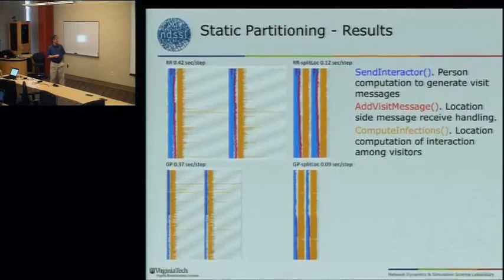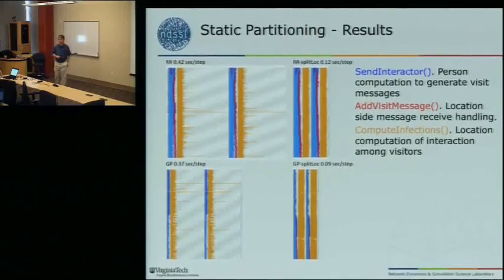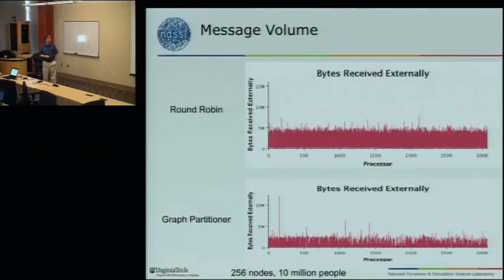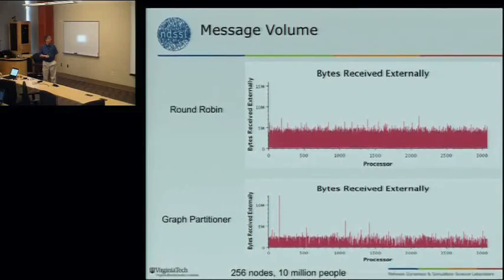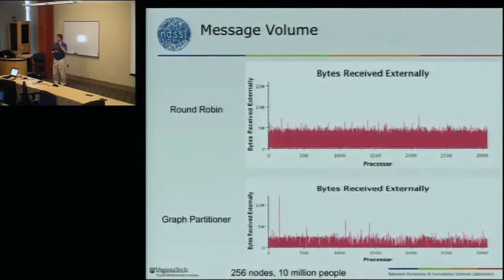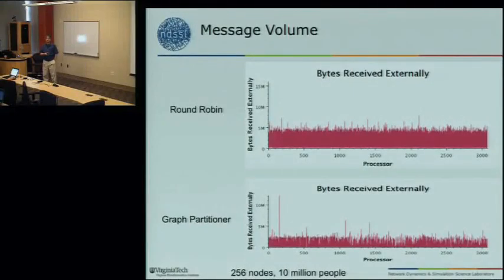We went from 0.4 seconds per time step down to about a hundredth of a second per time step — quite an improvement. One interesting finding: looking at the bytes received by each processor, round-robin is fairly even with some jitter. When we run through Metis, the average goes way down but there's a weird spike. That's because Metis optimizes on total edge cut, not necessarily the number of messages sent or received by any single processor. It's not yet clear whether this is a significant efficiency problem.